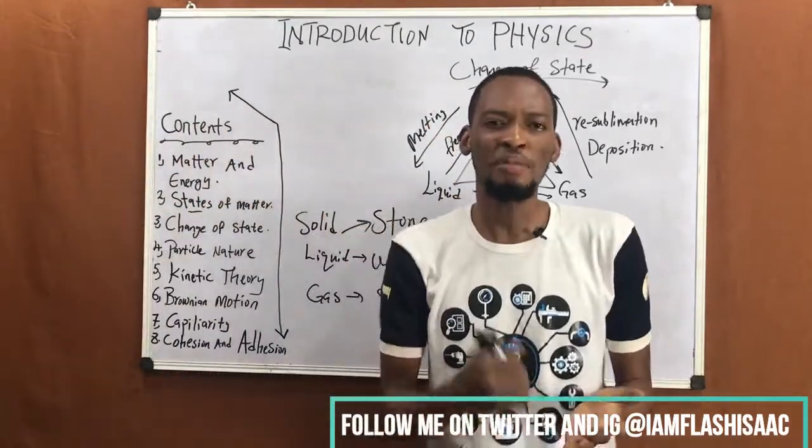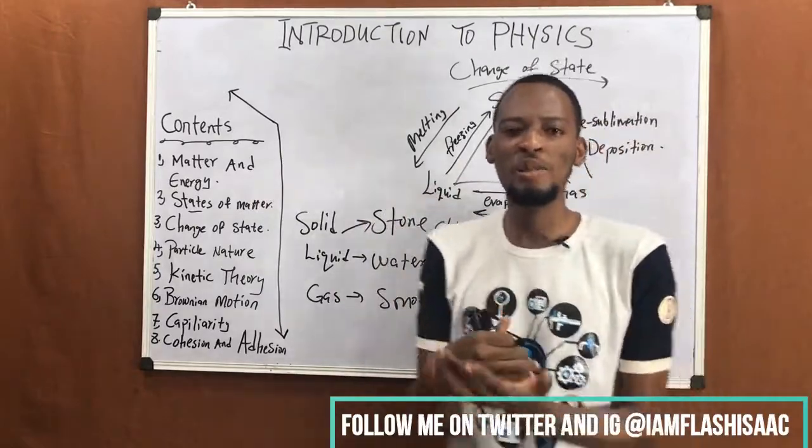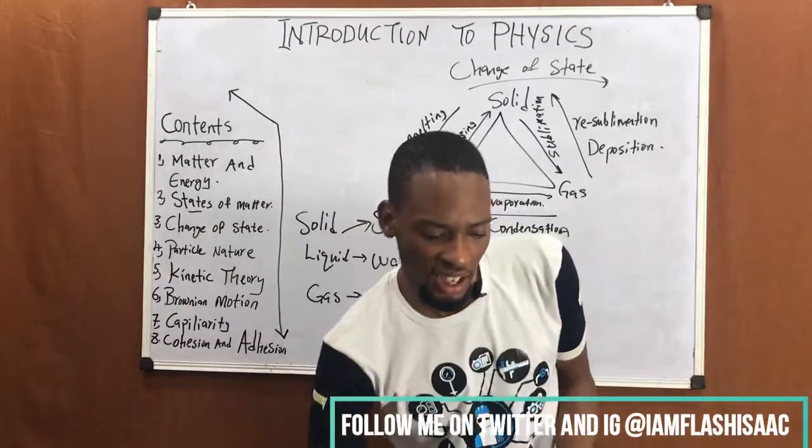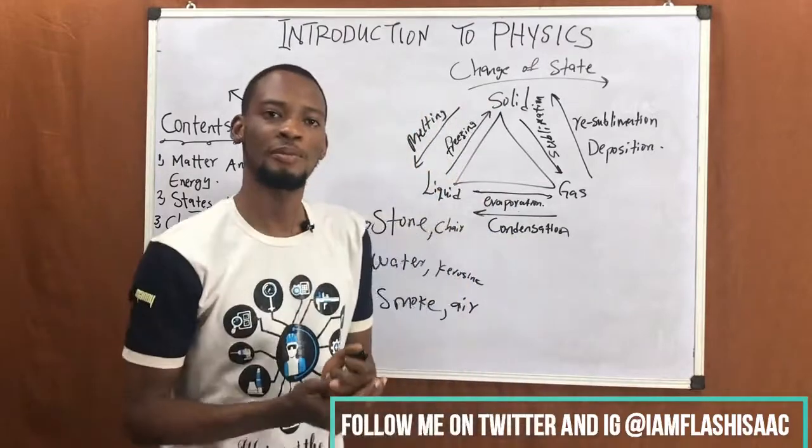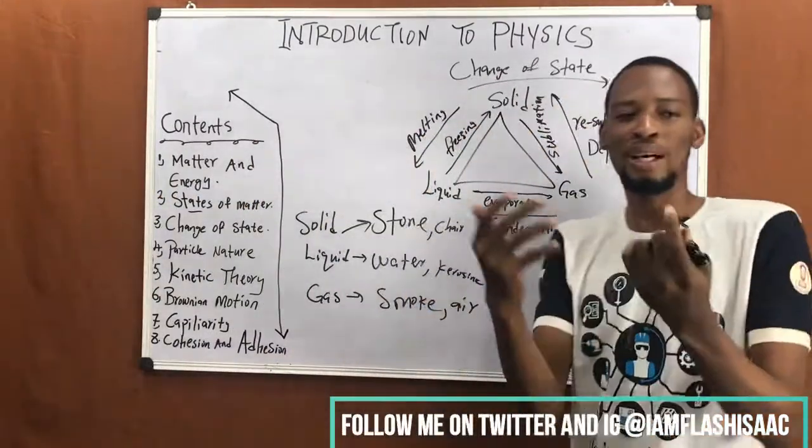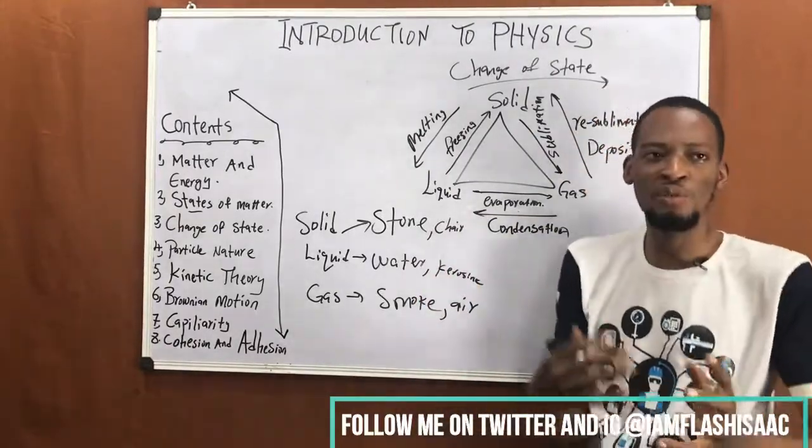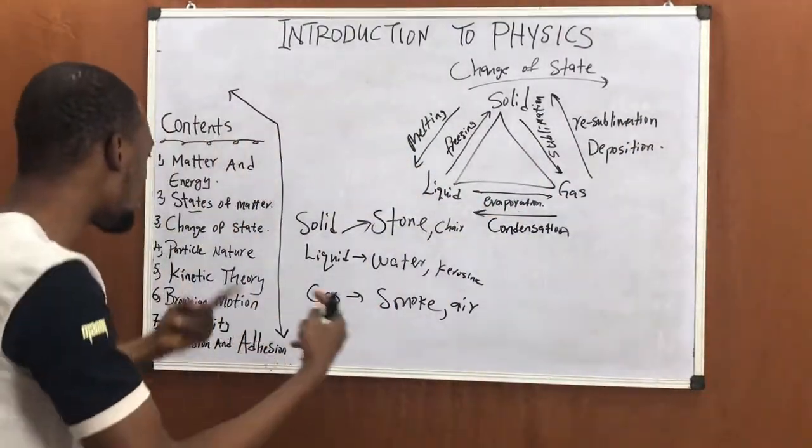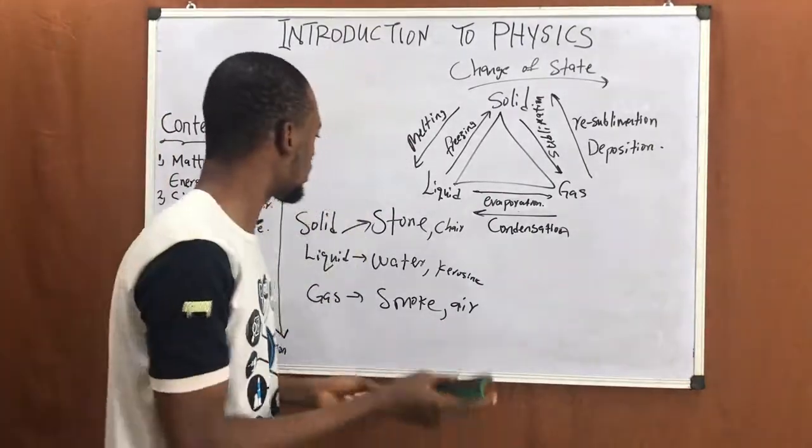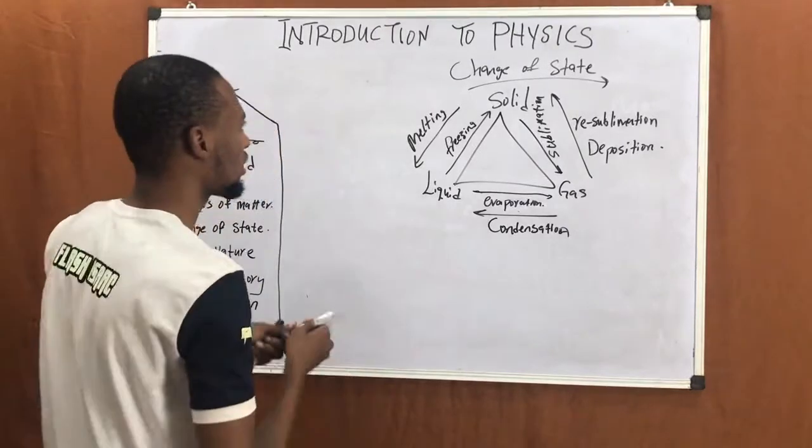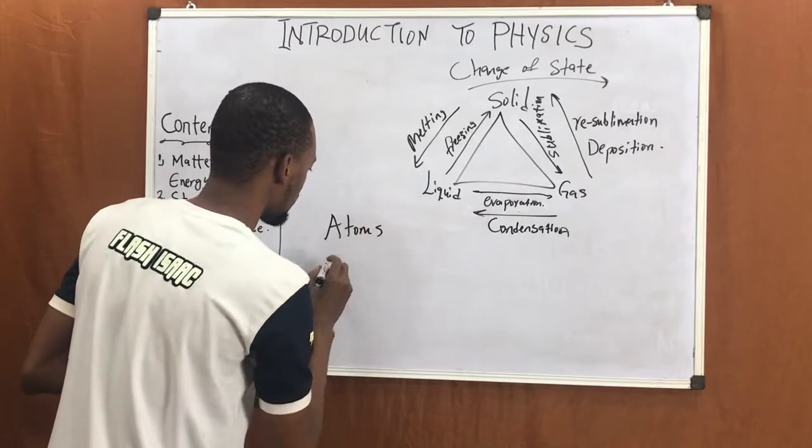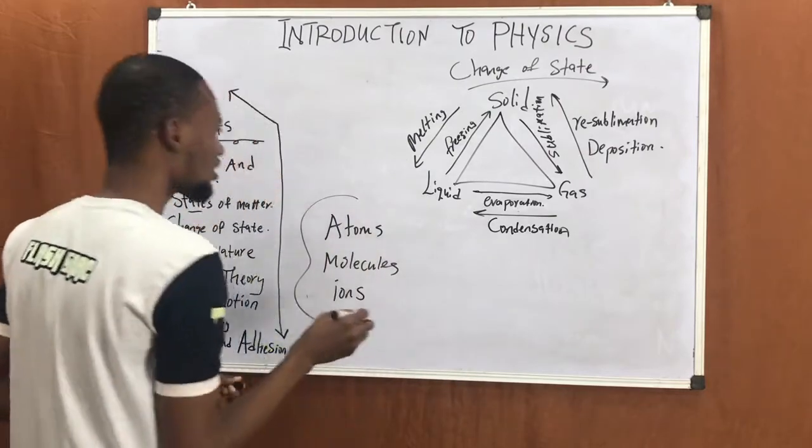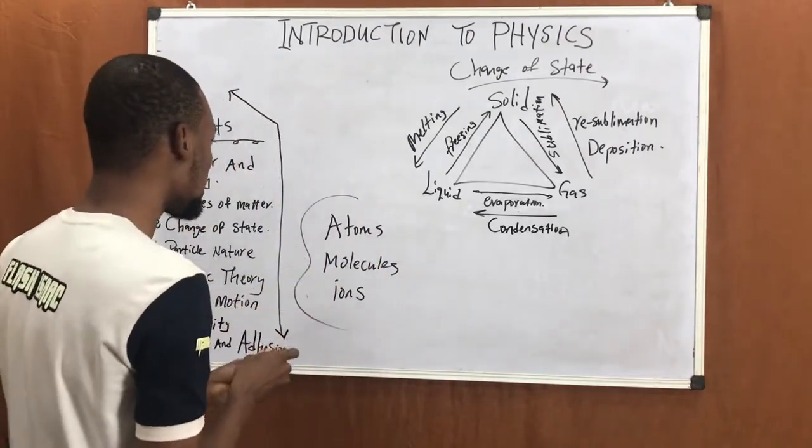There is a belief that matter is made up of particles, while some also believe that matter is made up of waves. That's why we have particle nature of matter and wave nature of matter. Some believe that matter is made up of particles, it has particle nature, while there's also belief that matter has wave nature. The belief that matter is made up of particles is called particle nature of matter. The particles matter is made up of are atoms, molecules, and ions. These are particles that matter is made up of.